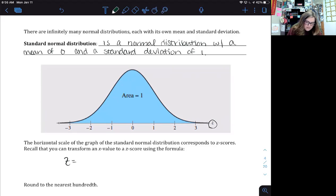Okay, so if you notice the horizontal scale of the graph of the standard normal distribution uses z instead of x. Okay, and then recall transforming an x value to a z score, we can use the formula z equals x minus mu divided by sigma, and we always want to round to the nearest hundredth or two decimal places.